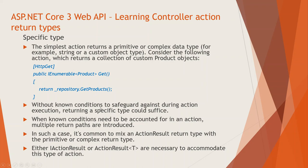Now, without knowing conditions to safeguard against during action execution, returning a specific type could suffice in many of the cases. But when known conditions need to be accounted for in an action, multiple return paths are introduced. In such a case, it is common to mix an action result return type — mark this: action result return type.